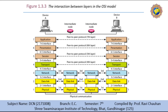How do layers interface with each other? The passing of data and network information down through the layers of the sending device and back up through the layers of the receiving device is made possible by the interface between each pair of adjacent layers. Each interface defines the information and services a layer must provide for the layer above it. Well-defined interfaces and layer functions provide modularity to the network. As long as a layer provides the expected services to the layers above it, the specific implementation of its function can be modified or replaced without requiring changes to the surrounding layers.